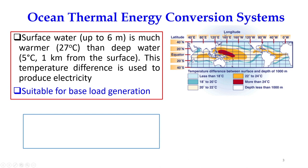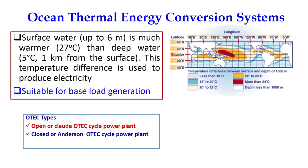We have studied the different classes of ocean thermal energy conversion systems. It includes the open or Claude OTEC cycle power plant, the closed or Anderson OTEC cycle power plant, and the hybrid cycle OTEC power plant. We have discussed the working of open cycle, closed cycle, and hybrid cycle.